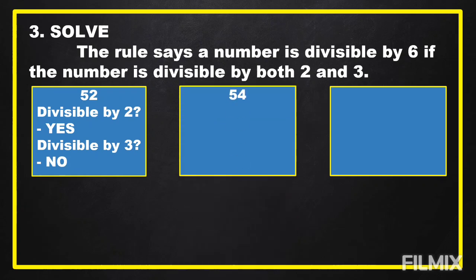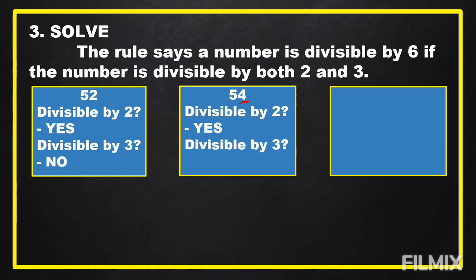Next option is 54. Is 54 divisible by 2? It ends with 4, and 4 is an even number, so yes, 54 is divisible by 2. Is 54 divisible by 3? We're going to add the digits: 5 plus 4 equals 9. And 9 divided by 3 equals 3, so 54 is divisible by 3.